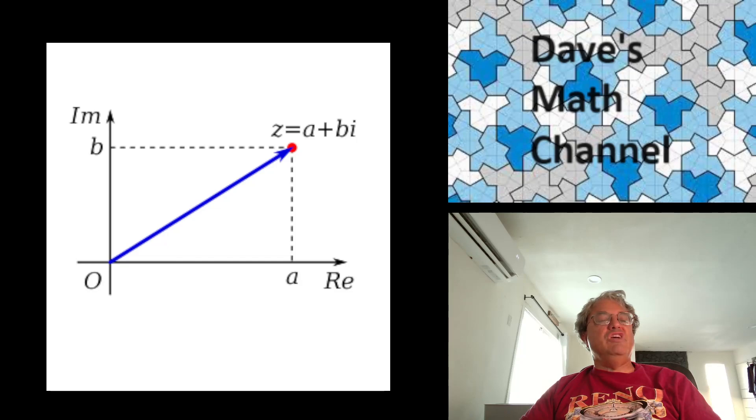So you can just think of it as a ray starting at the origin, which is known as a vector. And it has a real component and an imaginary component. We call that real component A and the imaginary component B. And then we say Z is equal to A plus Bi. So that's a nice visualization.